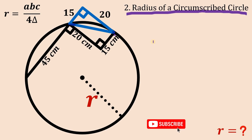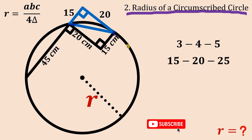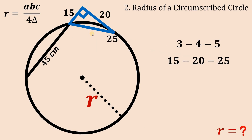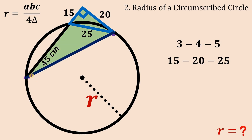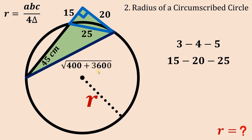This right triangle reminds us of a 3-4-5 right triangle — multiplying 3, 4, and 5 by 5 gives 15, 20, and 25 — so the hypotenuse of this triangle is 25 centimeters. Next, connecting another pair of points creates a triangle inside the circle. Using the Pythagorean theorem, the hypotenuse equals the square root of 20² plus 60², which is the square root of 400 plus 3600 equals the square root of 4000, or 20 times the square root of 10.